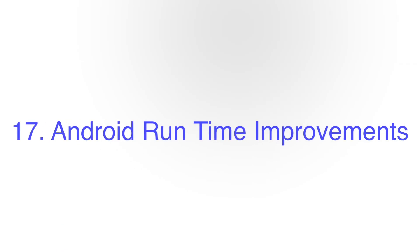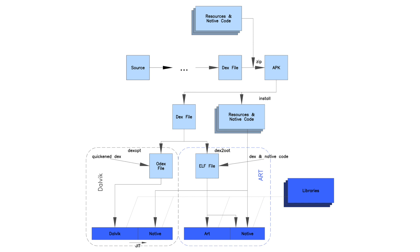Number 17 is Android Runtime Improvement. Android P is bringing improvements to ART, or Android Runtime. The improvement will boost app performance and will result in decreased app startup time and reduced DEX memory usage.